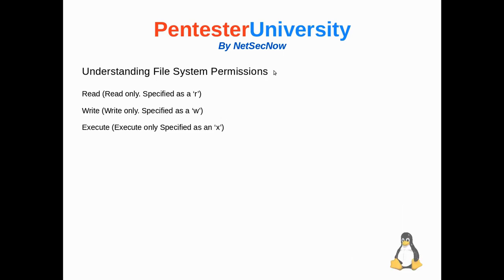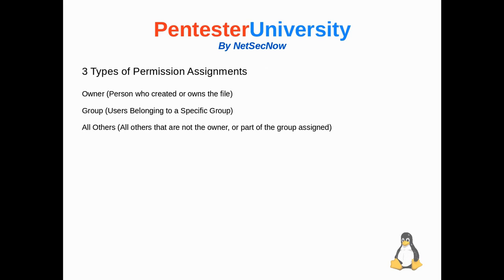Understanding the file system permissions, you have just three. It's really read — that's read only, specified as a lowercase r. And then you have write, which is write only, specified as a lowercase w. And then you have execute — execute only, specified as a lowercase x.